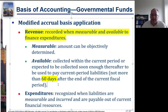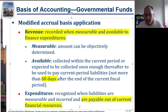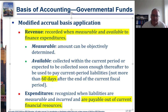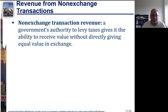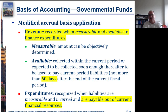Expenditures are recognized when the liabilities are measurable and incurred — similar to financial accounting — but additionally, they must be payable out of current financial resources. That means you need to pay the liabilities this year or within 60 days of year end. There is a gray area where you could have some choice about whether something is paid within 60 days or 90 days, and it's a somewhat unusual aspect of modified accrual.